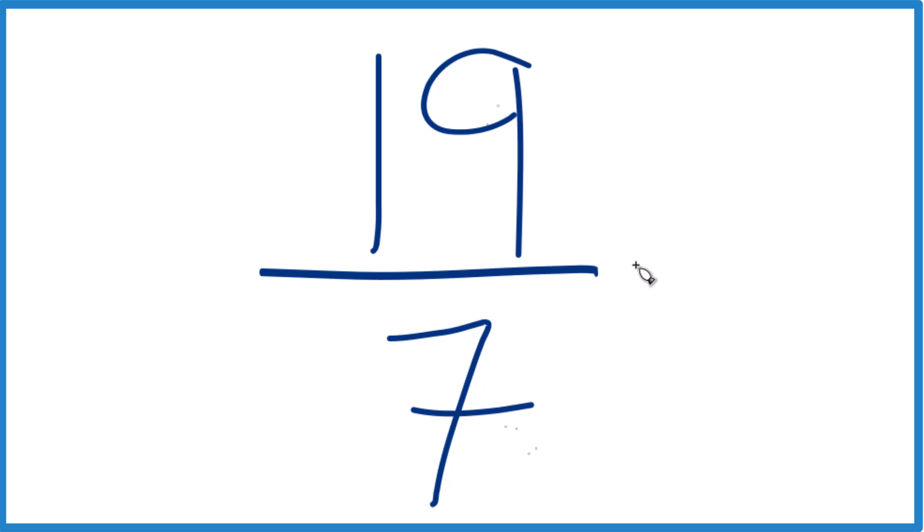So when we're simplifying fractions we want to find a whole number that goes evenly into both 19 and 7. The thing is the only whole number that goes into 19 and 7 evenly is 1. That's our common factor.